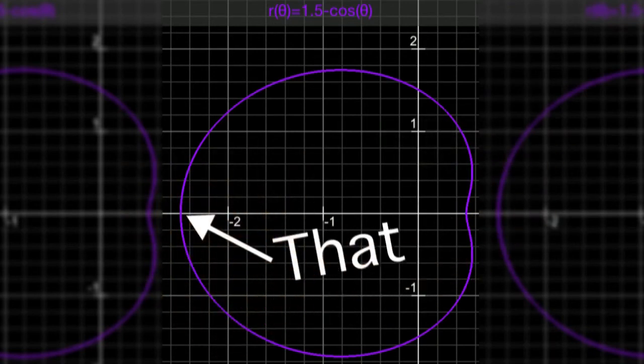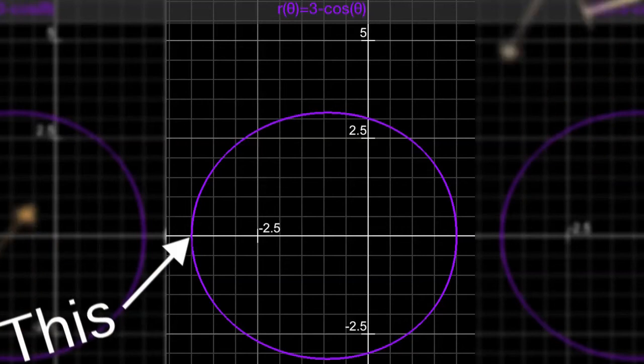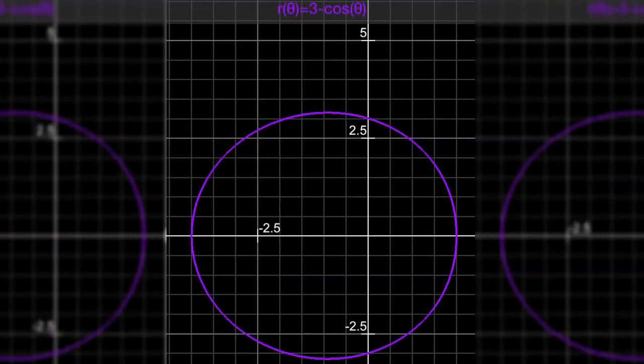3 minus cosine - that's a limaçon. Why? Because when cosine of zero is one, that's two. When cosine is pi, that's four, and that's why you get the flattening of the circle on the x-axis.